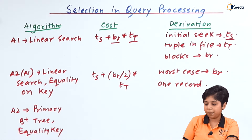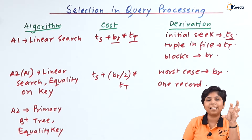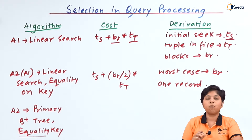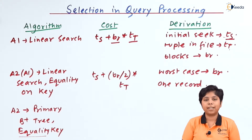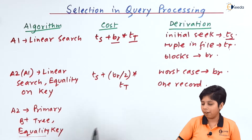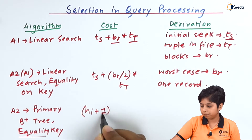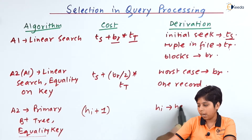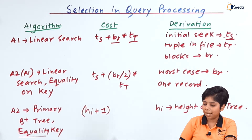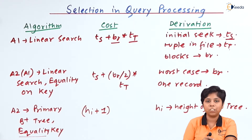Now, for a primary index with an equality key on a B+ tree, the primary key is the index key for that B+ index file. When we have both conditions — primary key and equality key — we first build on the primary key indexing. This requires one extra seek for each level due to the height of the primary key B+ tree and the index it follows, giving cost hi + 1, where hi is the height of the B+ tree.